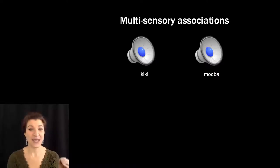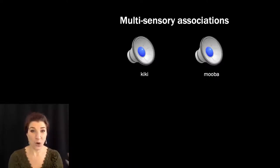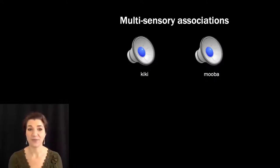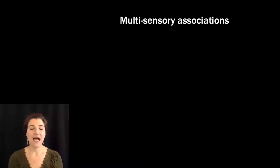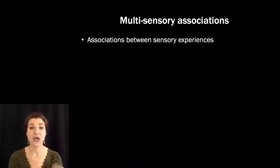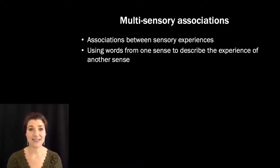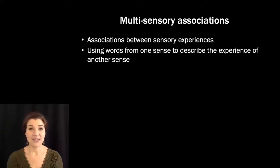Isn't it interesting that we have these shared intuitions about certain words sounding like certain things? But it's important to note that kiki and mooba — those words — are just sound waves. They're just patterns of pressure moving through the air. So why does mooba remind us of hot cocoa and a bassoon rather than lemonade and a flute? These are what we refer to as multisensory associations. People associate specific sensory attributes with one another and use qualities from one sense to describe experiences in other senses.